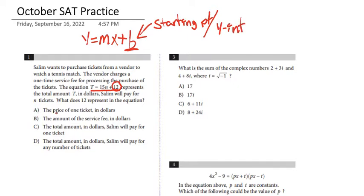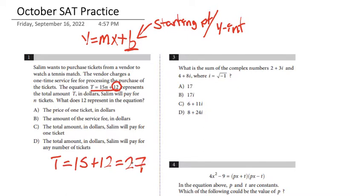Looking at the answer choices: the price of one ticket in dollars, the amount of the service fee, the total amount in dollars Solem will pay for one ticket, or the total amount in dollars Solem will pay for any number of tickets. If Solem were to buy one ticket, n would equal 1, and the total cost would be 15 plus 12, which is 27. So it cannot be the price of one ticket.